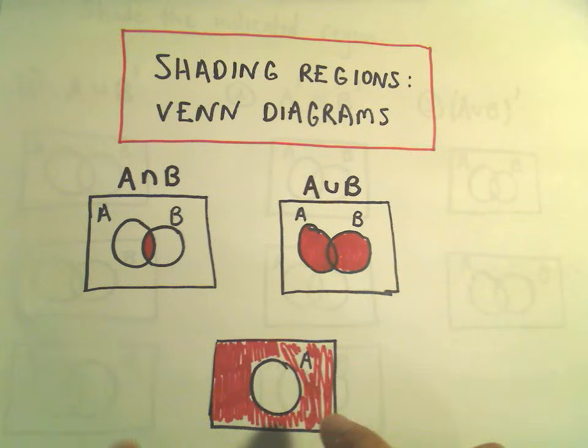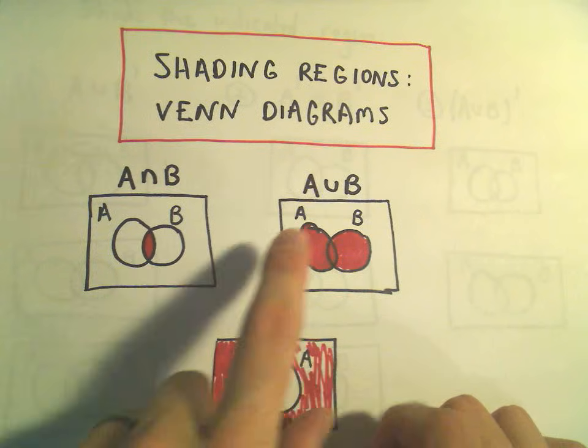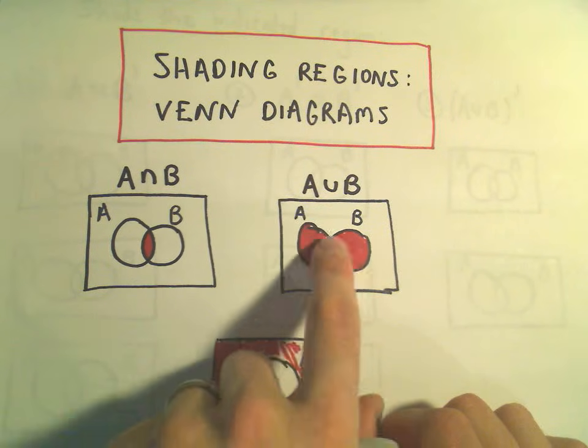So an important idea: the intersection, you just shade the overlap. For union or OR, we shade everything.